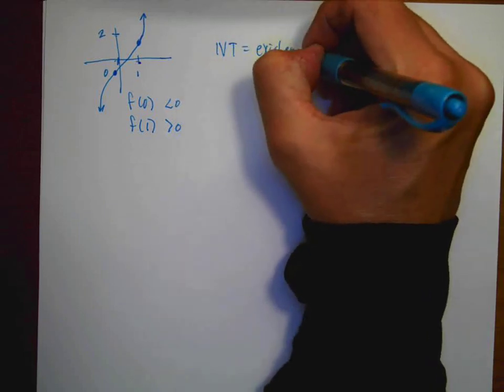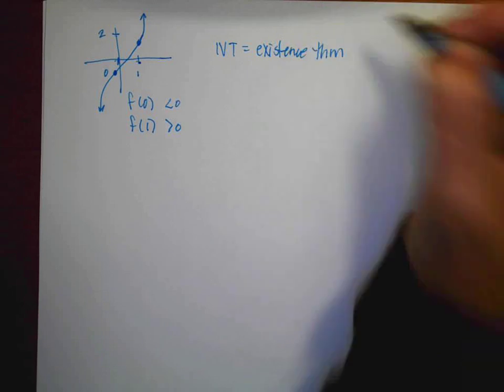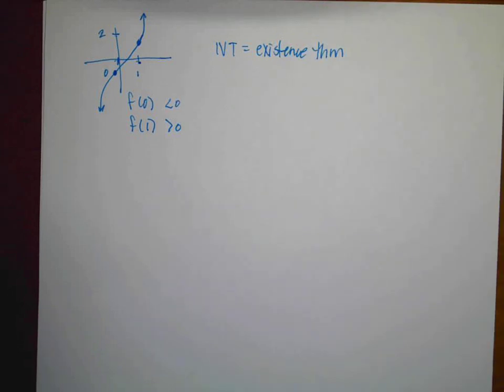So that's what the intermediate value theorem does. The IVT is called an existence theorem. And it just tells you that in the interval from a to b, you potentially have a 0. And that's it. But it is a very important concept that you will need to make sure that you add to your note sheet. Alrighty. That is it for today.